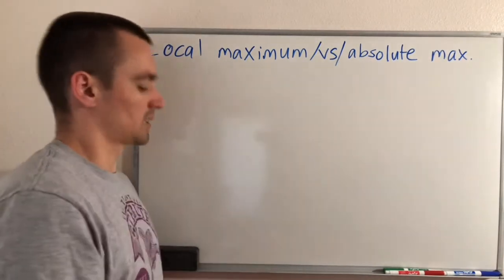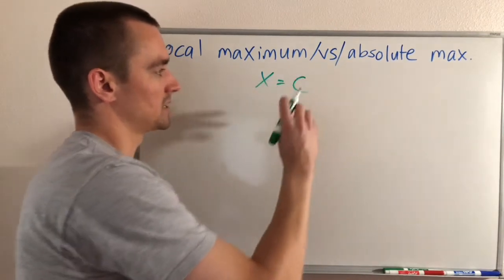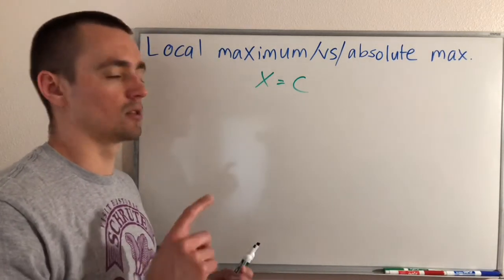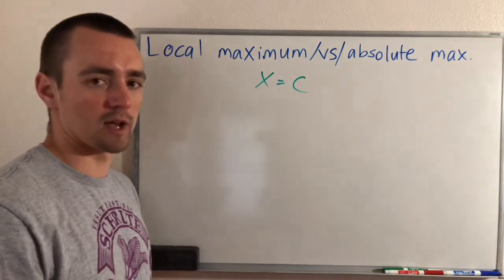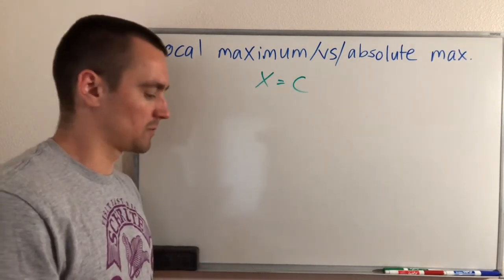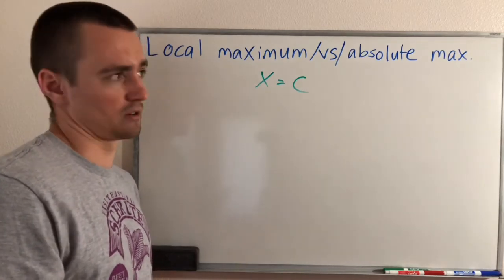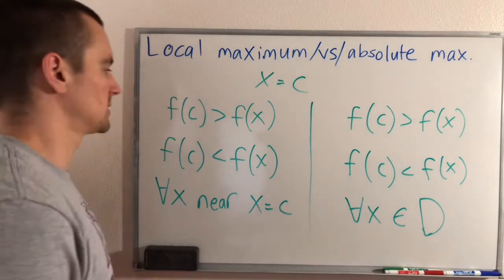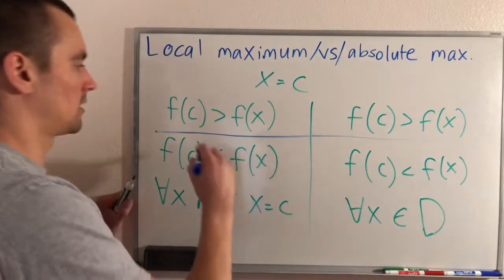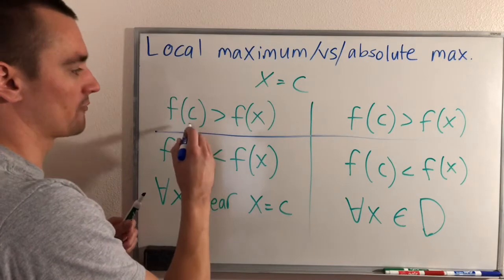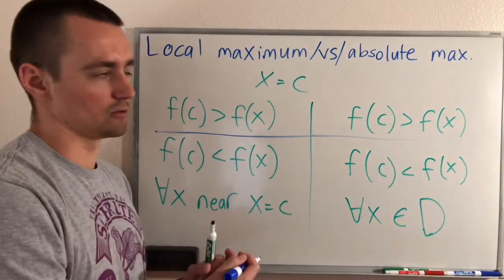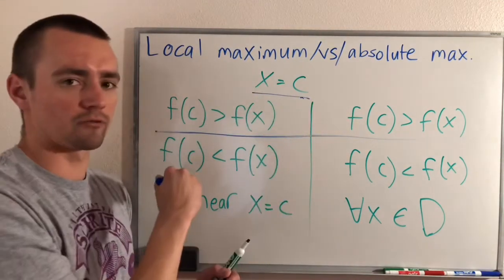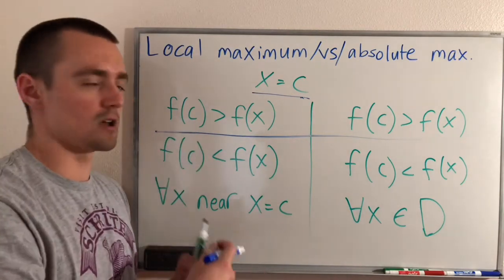So let's say we're looking at a specific x value — let's say we have x equals c, where c is just some constant. We are trying to figure out if x equals c is a local maximum, local minimum, absolute maximum, or absolute minimum. How we can figure that out is basically just from the definition of what those things mean. A maximum will occur whenever f of c is greater than all the f of x values we're comparing it to — meaning if we plug this x value c into our function, we get some output that's bigger than the other outputs of our function.